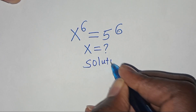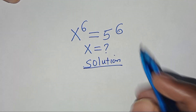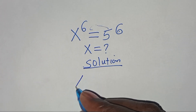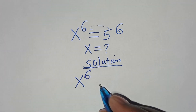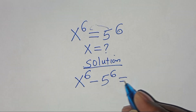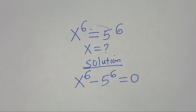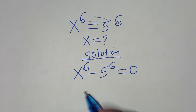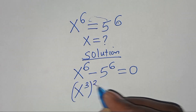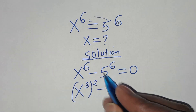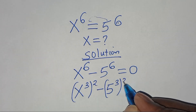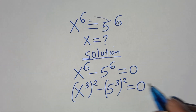Solution: from here, let's take 5 to power 6 on the left hand side, so that here we have x to power 6 subtract 5 to power 6, this is equal to 0. x to power 6 can be expressed as x to power 3 squared, subtract 5 to power 6, which you can express as 5 to power 3 squared, this is equal to 0.